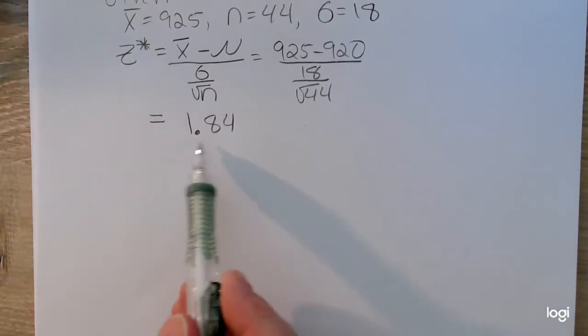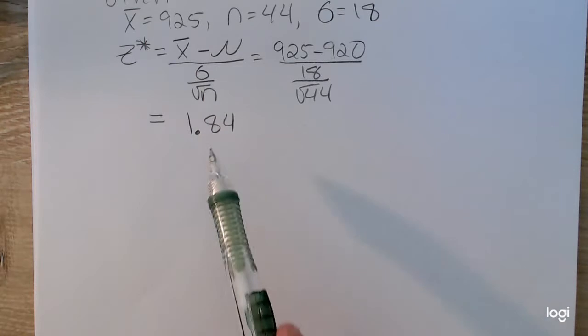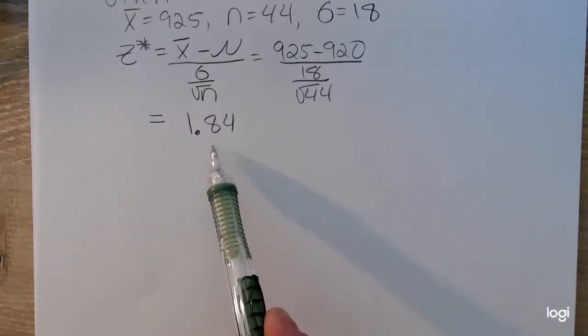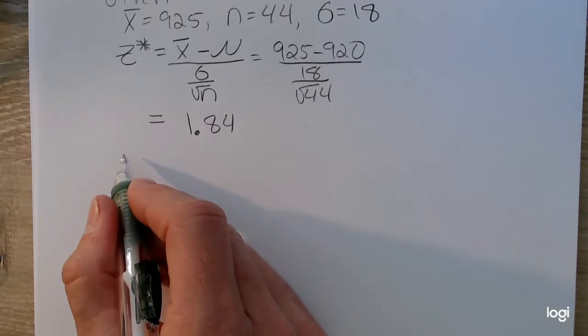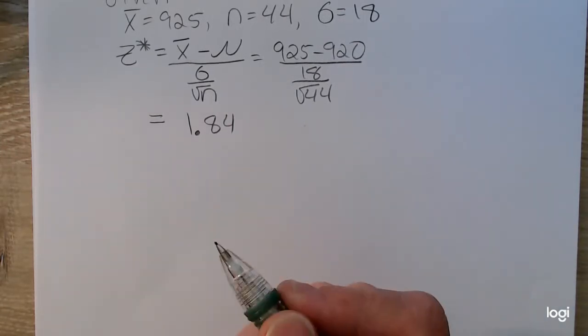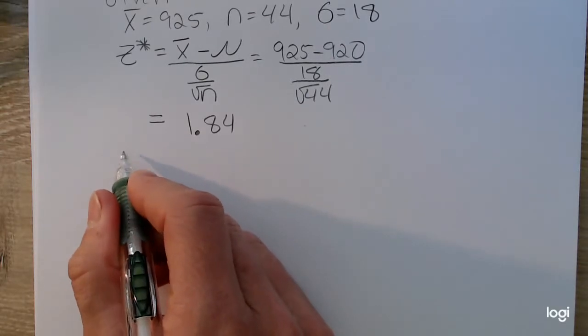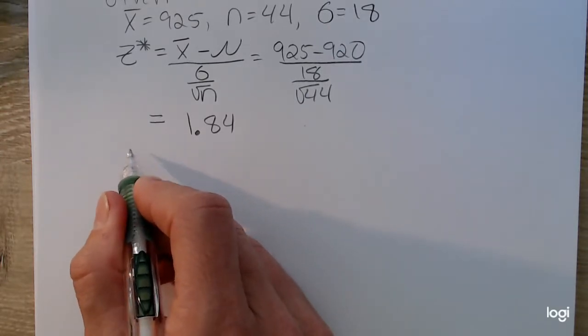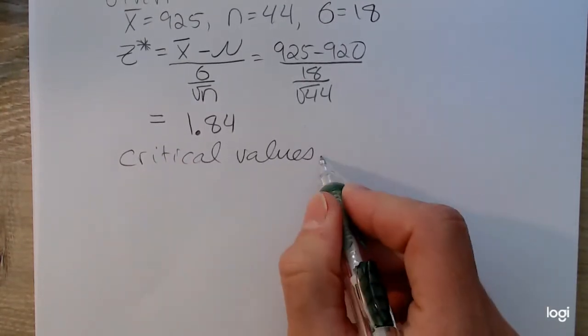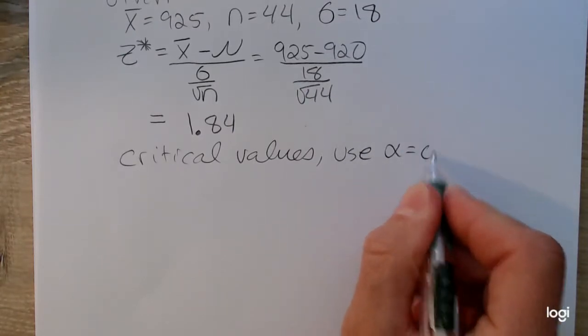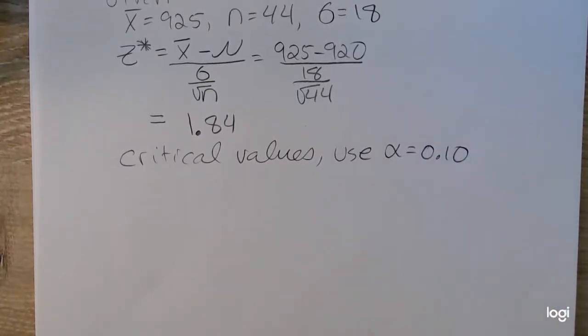This means that what we observe from our sample is 1.84 standard deviations away from the mean. Now is this enough to reject the null hypothesis? We need to use our level of significance to answer that. So we need to find the two critical values based on alpha. I have two critical values because this is a two-tailed test.